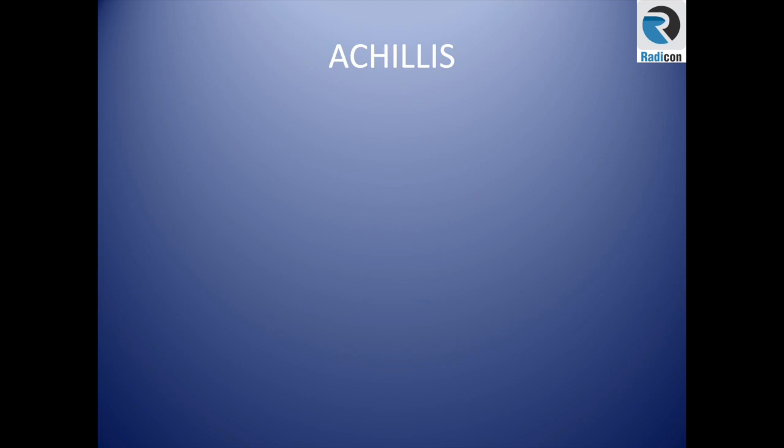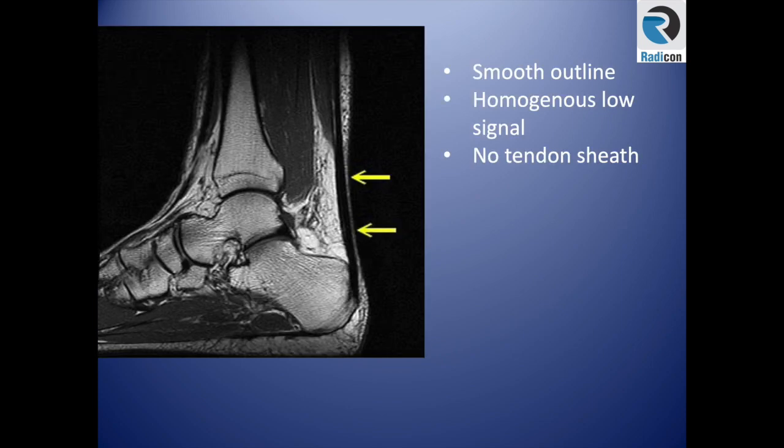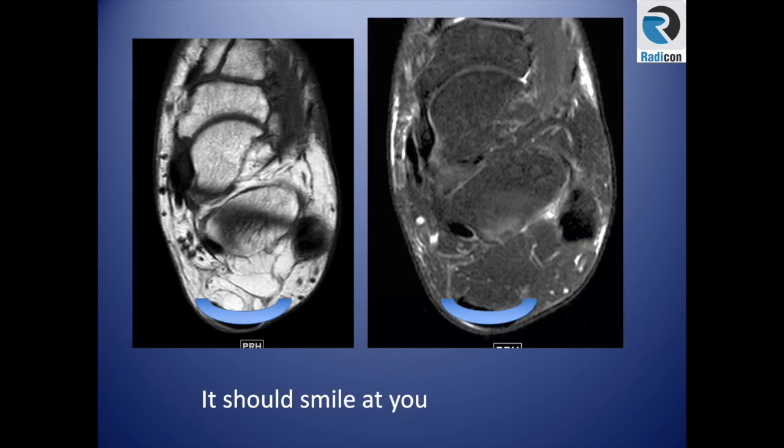The Achilles tendon is the combined tendon of the gastrocnemius and soleus muscle, with sharing of the plantaris. It has a smooth outline and homogeneous low signal intensity. This tendon has no tendon sheath, so there is no tenosynovitis of the Achilles tendon. When you look at it in the axial view, it should smile at you — it has a concave inner surface.